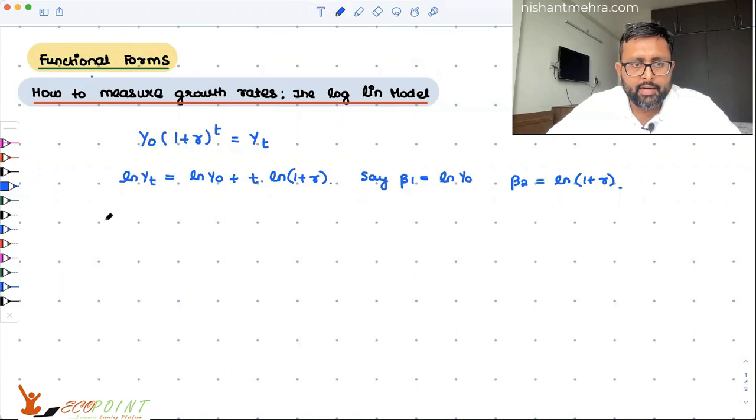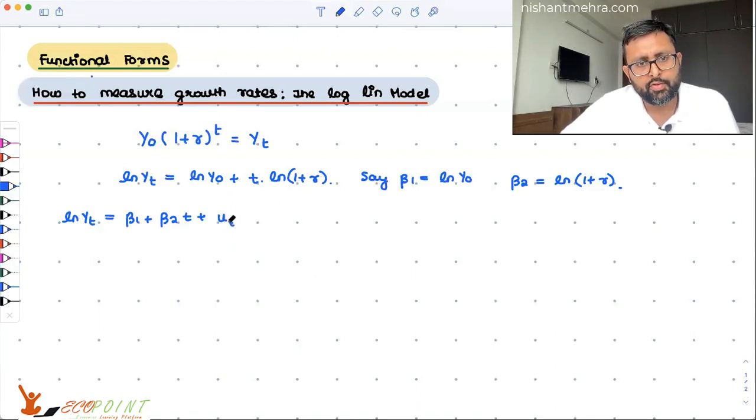So I can write this model as log of yt equals beta 1 plus beta 2*t plus ut. So how do we interpret this beta 2? That's the question.